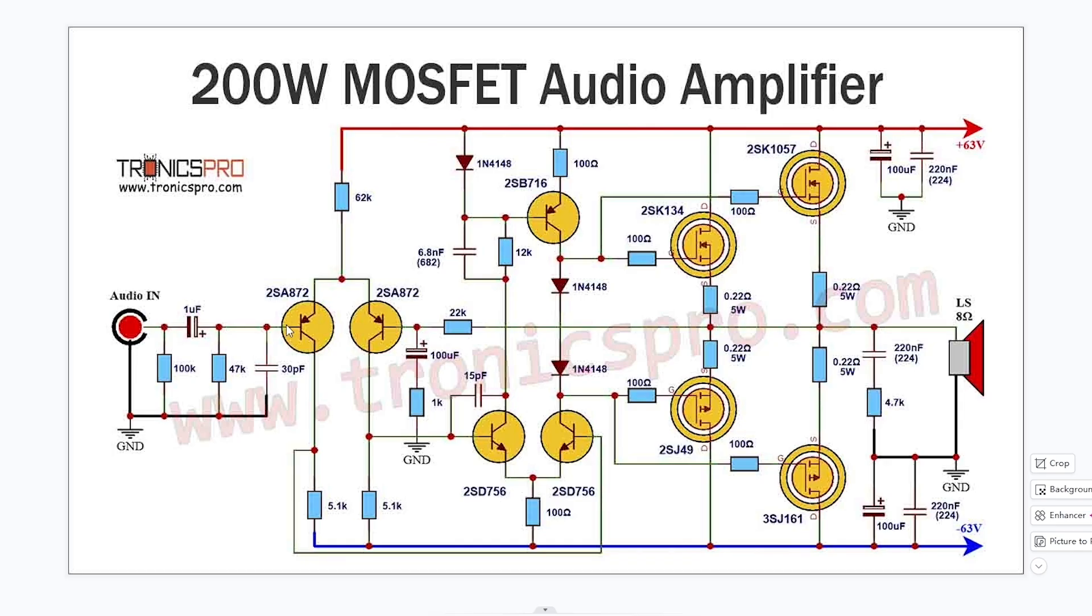These 2SA872 PNP input transistors for the long tail pair can be substituted for an MPSA92. However I don't have any MPSA92s. I've got MPSA42 which is the NPN so when I'm actually building this up and testing it I'll just substitute them out for BC556 just to get it going. I'm not really particularly worried about it and keep the supply voltage under 35V.